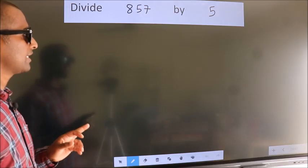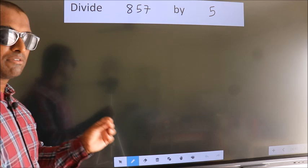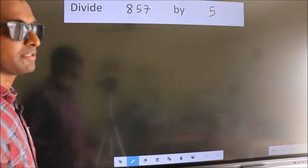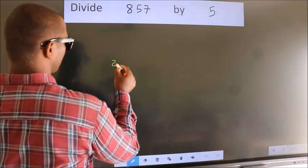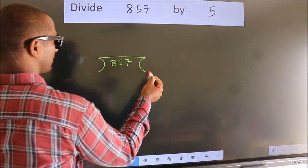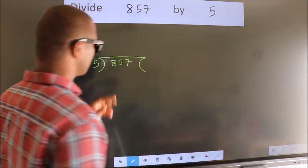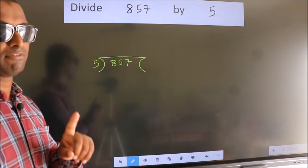Divide 857 by 5. To do this division, we should frame it in this way. 857 here, 5 here. This is your step 1.